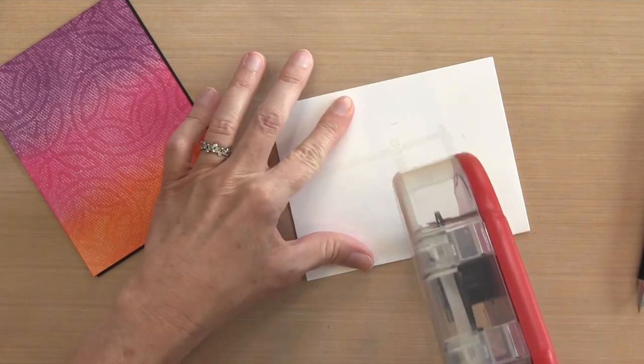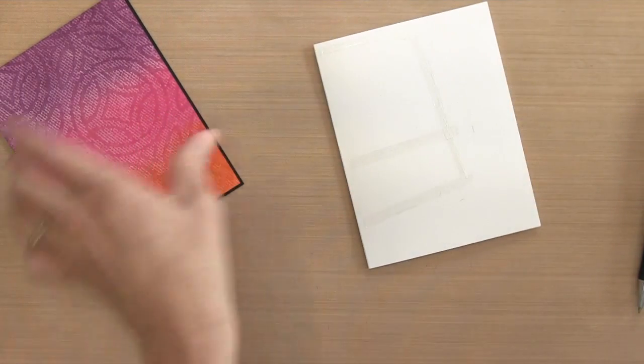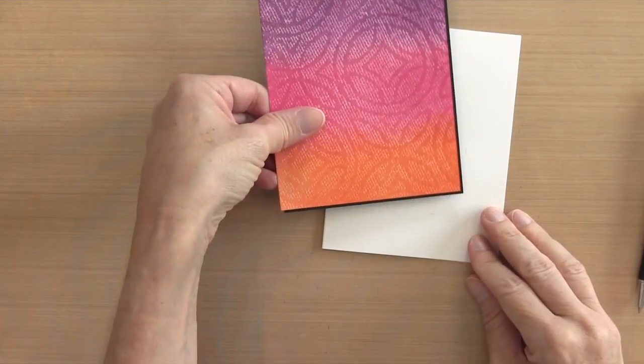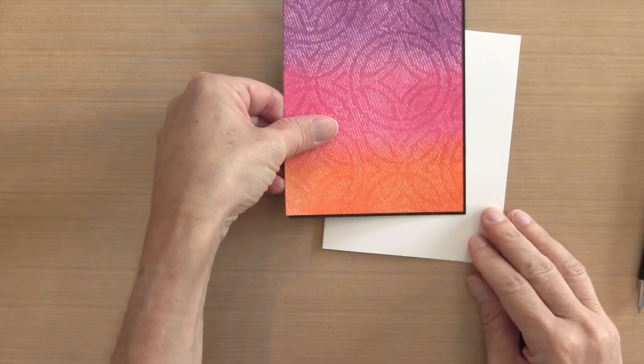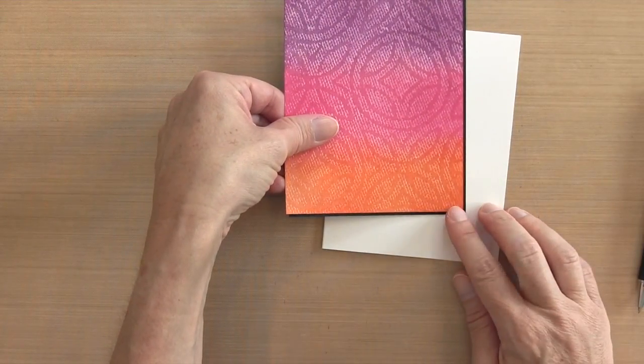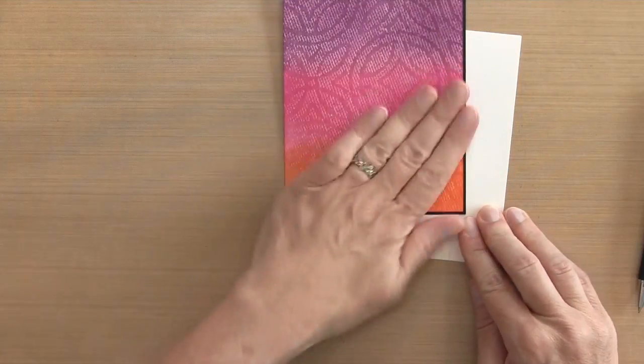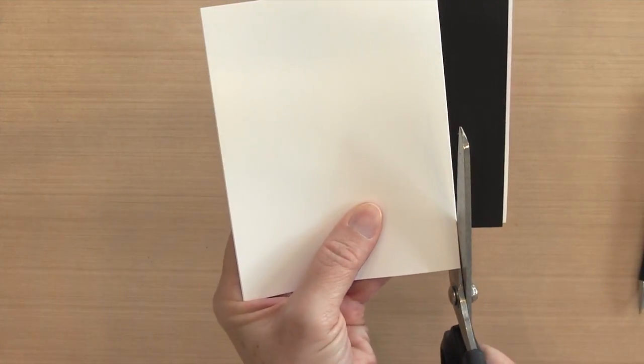So when I put it back, I put it right back in the same spot. And then I'm going to put some ATG tape runner on my card base since I'm not sure exactly where to put it on my other panel. And I'll just put it right back where my pencil lines are and I'll press that in place and just use a scissor to cut off the part that's hanging off the cardstock.